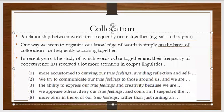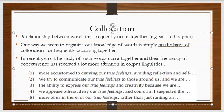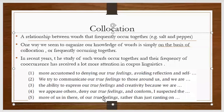In recent years, the study of which words occur together and their frequency of occurrence has received a lot more attention in corpus linguistics. Using a large corpus representing millions of words of daily life conversation, we can find collocates and see how frequently they occur together. This relationship of occurring together is called collocation, and the words are called collocates of each other.